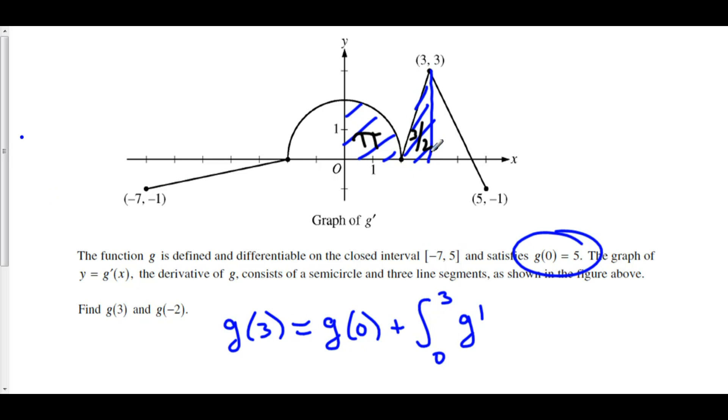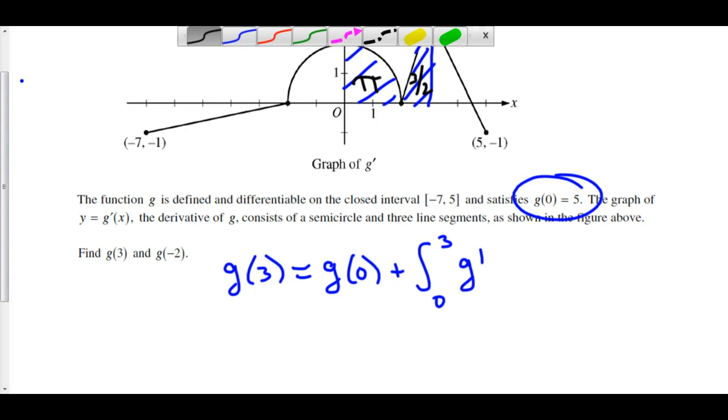And that is the net change from 0 to 3. So, we now know that g of 3 is equal to g of 0, which they told us was 5, plus the integral from 0 to 3 of g prime, which is pi plus 3 halves.